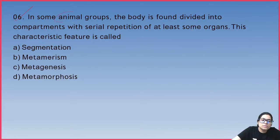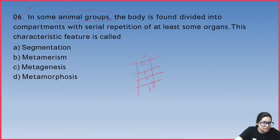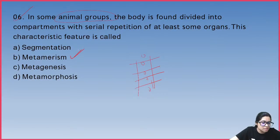In some animals, the body is divided into compartments with serial repetition of organs in those divisions. This characteristic is known as metamerism.